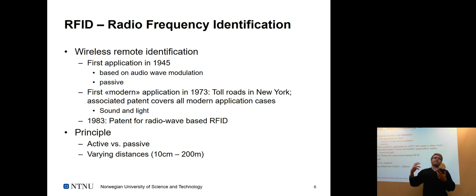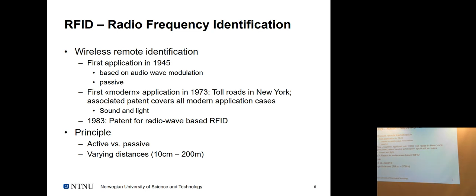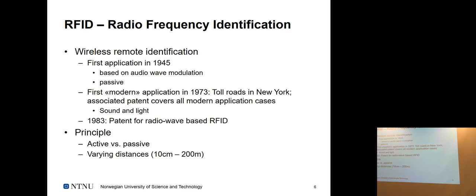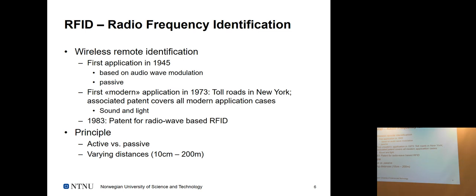Early RFID-like systems didn't use radio frequency — they used sound and light. Even earlier, similar audio mechanisms were used for spying in 1945 in a Soviet-era invention. The second iteration added light because sound wasn't ideal for vehicles. The first modern RFID patent came out in 1983, which became the predecessor of the radio-wave-based RFID we use today.